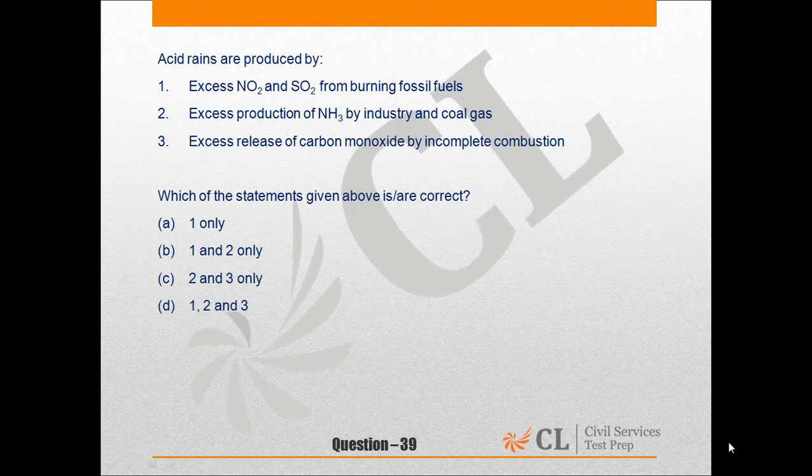The question says: Acid rains are produced by — Statement 1: Excess nitrogen dioxide and sulfur dioxide from burning fossil fuels. Statement 2: Excess production of ammonia by industry and coal gas. Statement 3: Excess release of carbon monoxide by incomplete combustion. Out of these three statements,